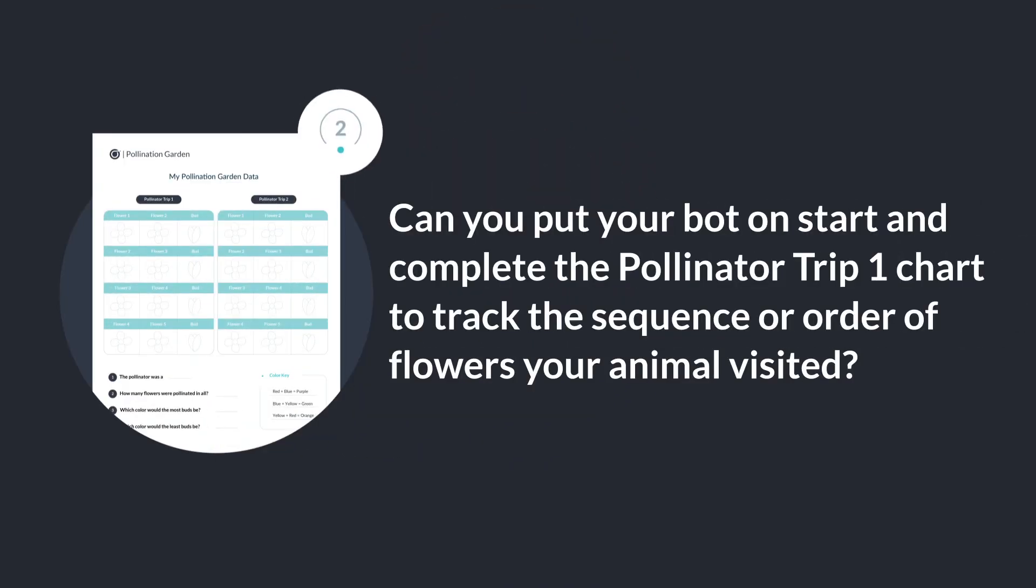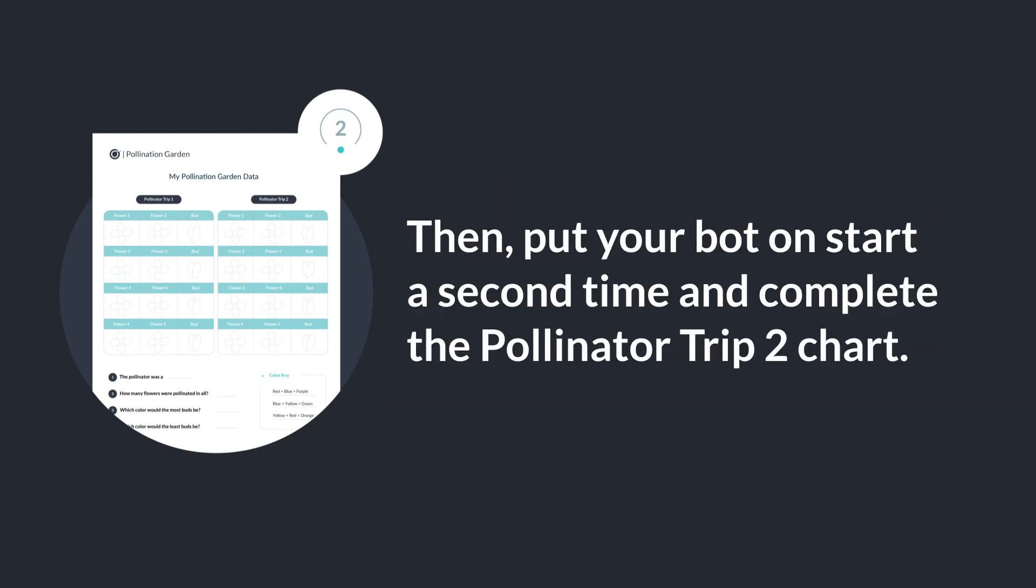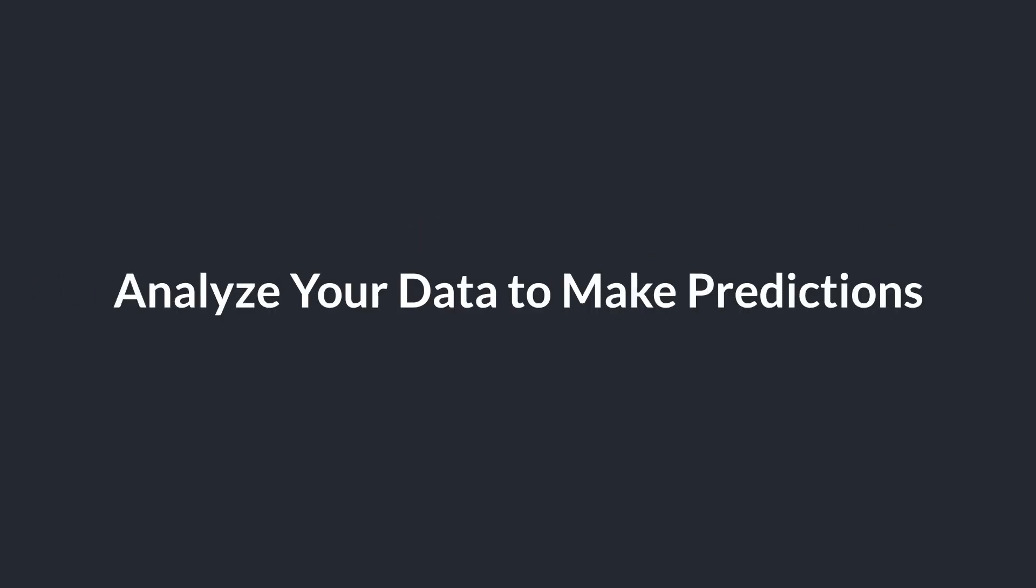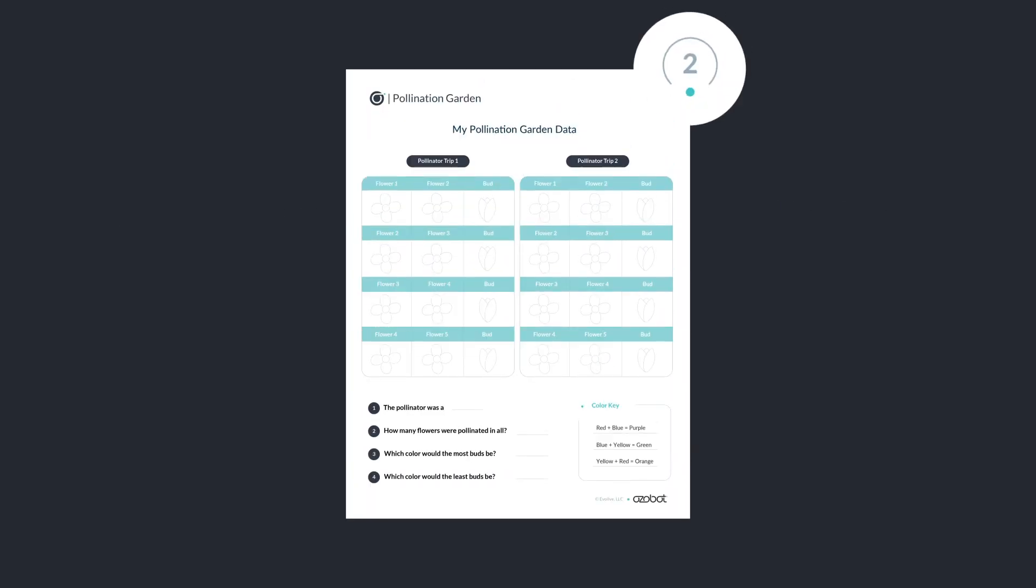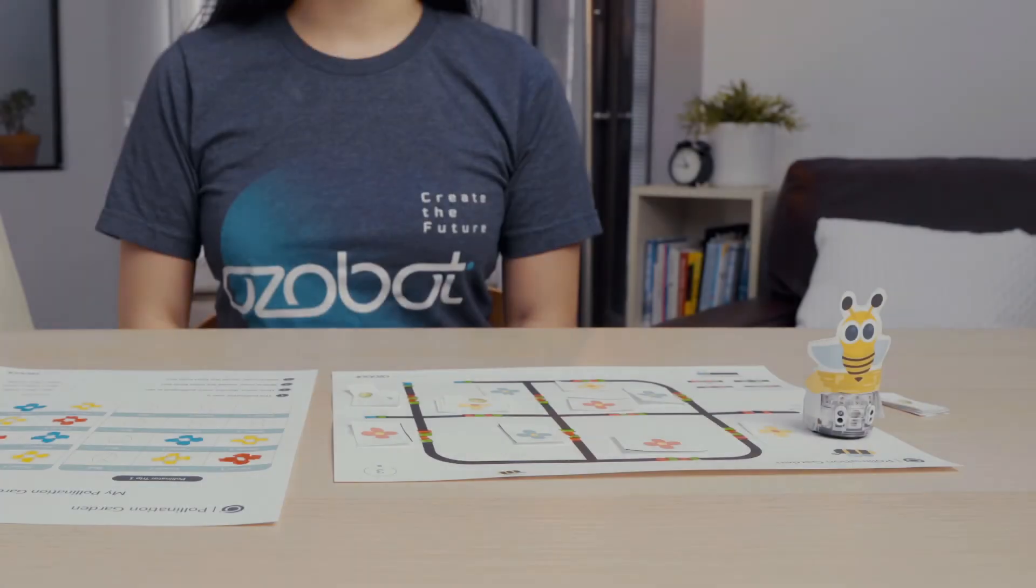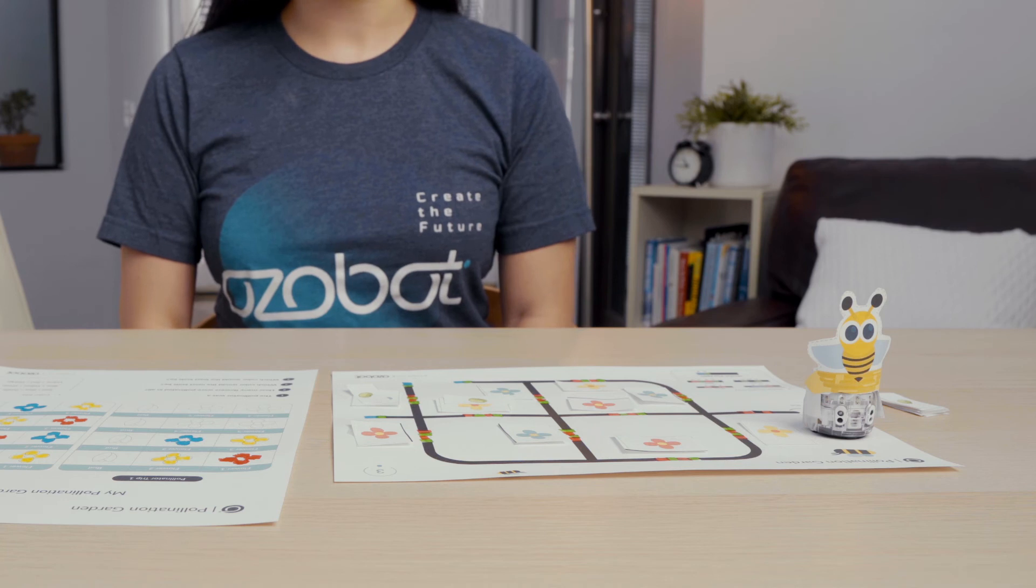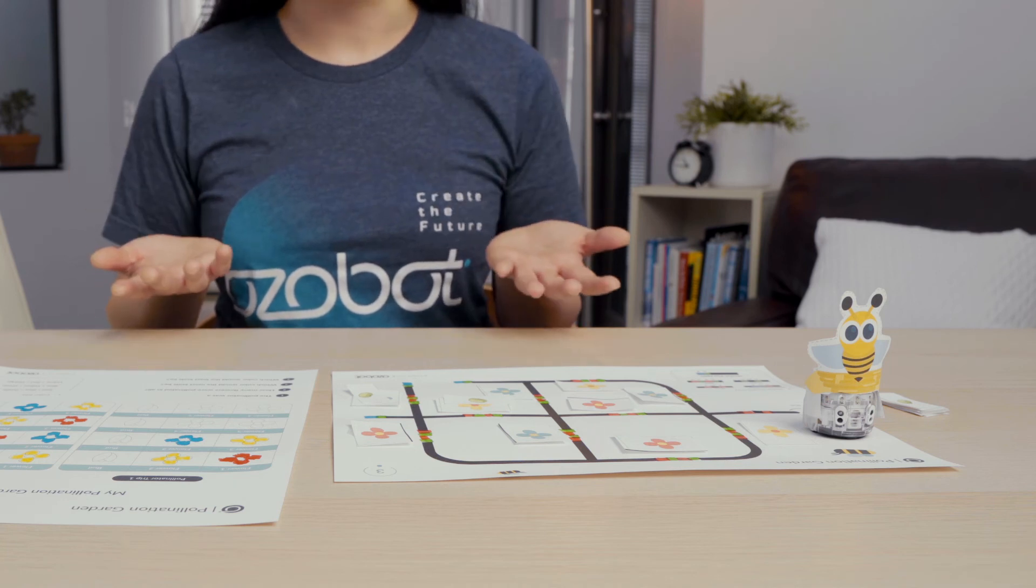Can you put your bot on start and complete the pollinator trip one chart to track the sequence or order of flowers your animal visited? Then put your bot on start a second time and complete the pollinator trip two chart. Great job collecting some data or information about the flowers your animal pollinated.